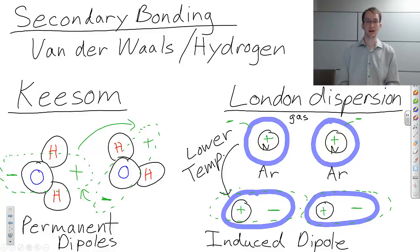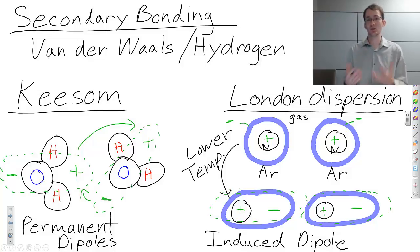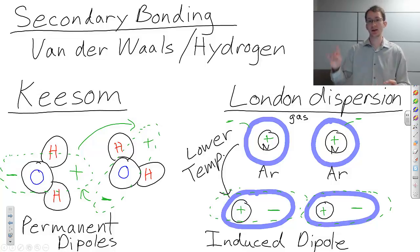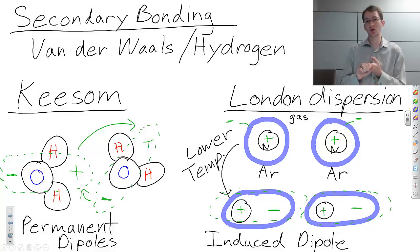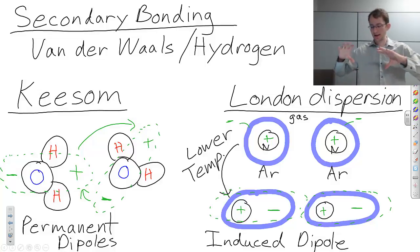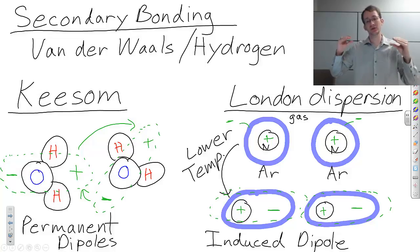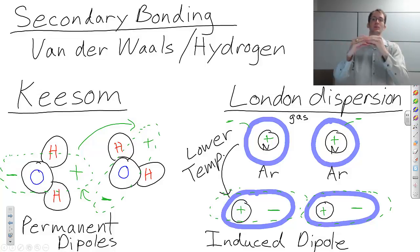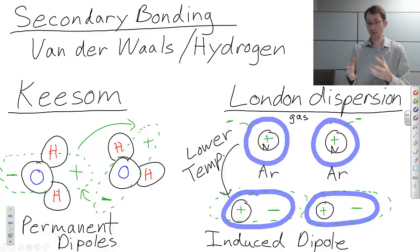This dipole induction is actually what liquefies all noble gases. So you can have liquid nitrogen, liquid argon, liquid xenon. These are created by decreasing the temperature and getting these dipoles to become induced, and then the atoms start to stick together and become a liquid.